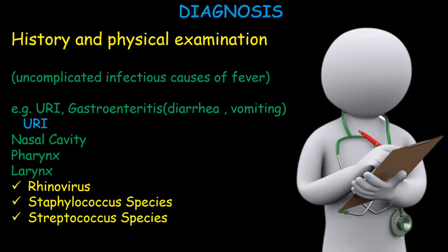Another cause is gastroenteritis, which is an inflammation of the gastrointestinal tract that usually manifests with diarrhea, vomiting, and abdominal pain. It is most commonly caused by viruses, but can also be caused by bacteria, parasites, and fungi. We can also perform lab tests and imaging for the differential diagnosis.